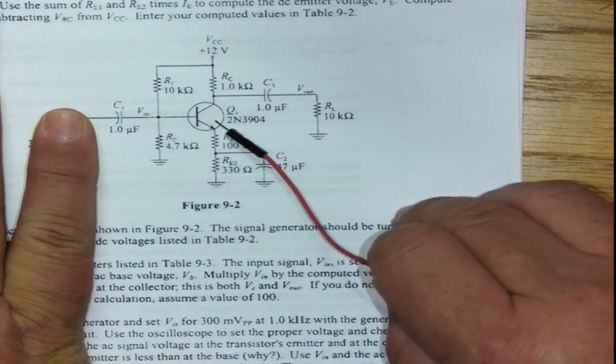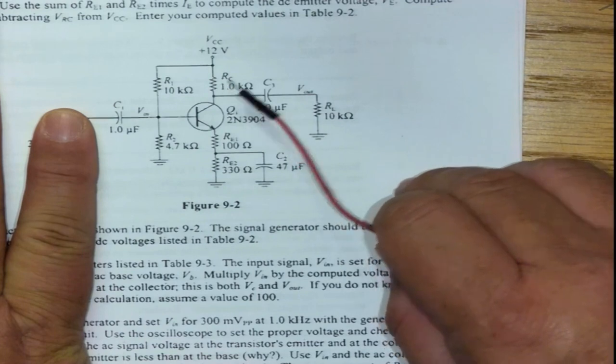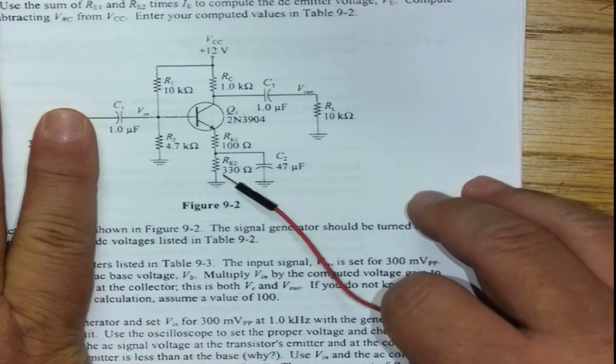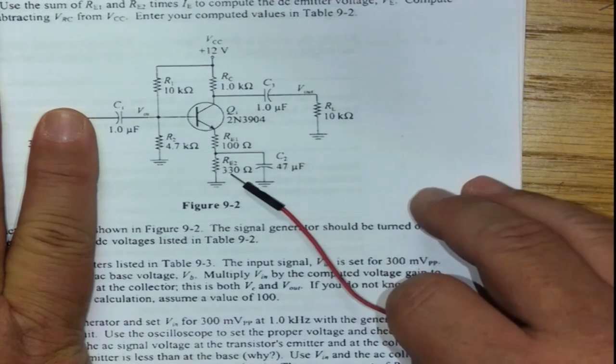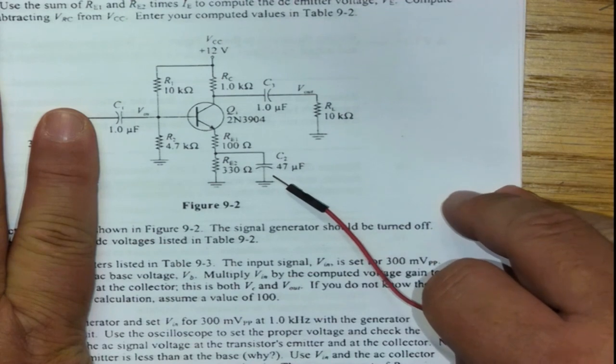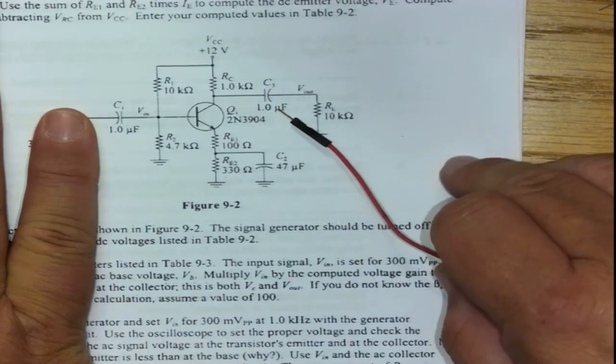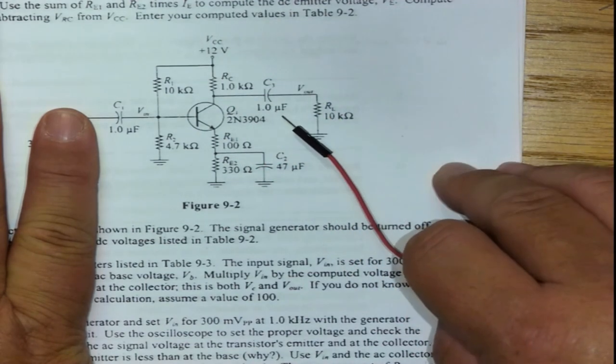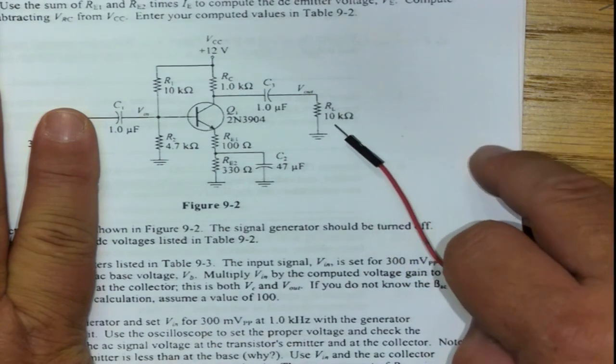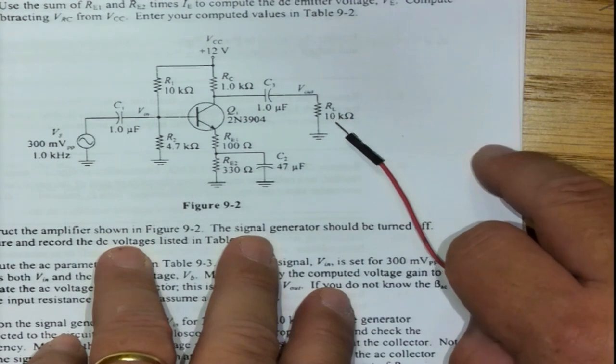We have a transistor. You've got R1, R2, Rc which is your collector resistor. And then Re is split into two, Re1 and Re2 with a bypass capacitor here, C2 on the emitter side. The output of the transistor goes through C3 and that is presented to a load resistor. So that's the circuit.